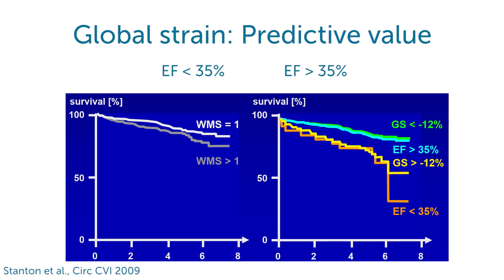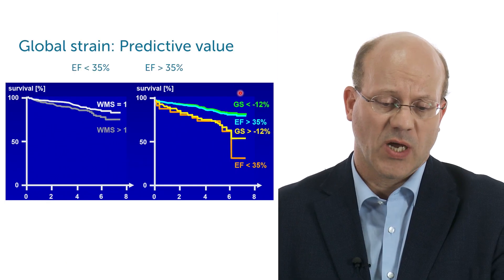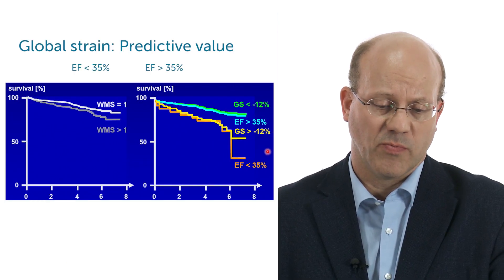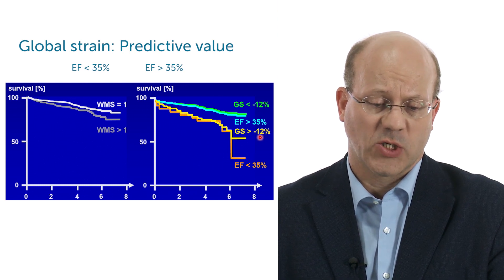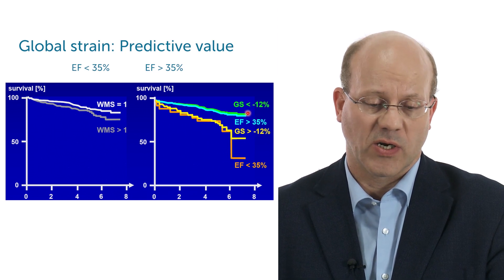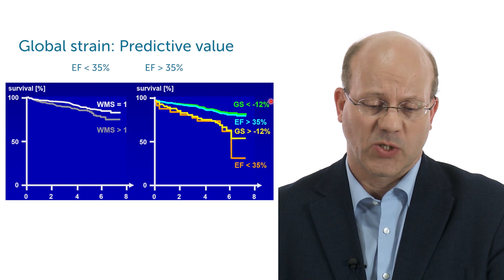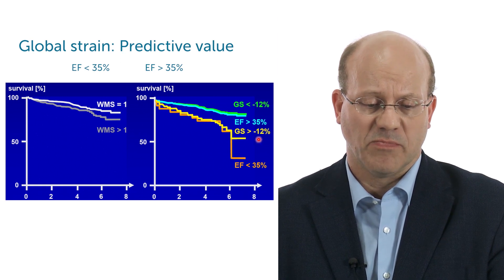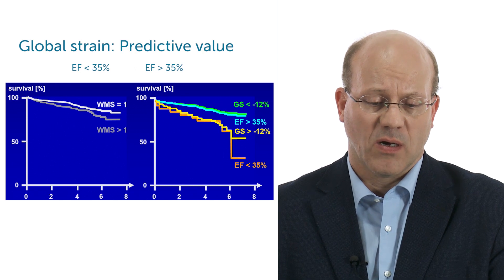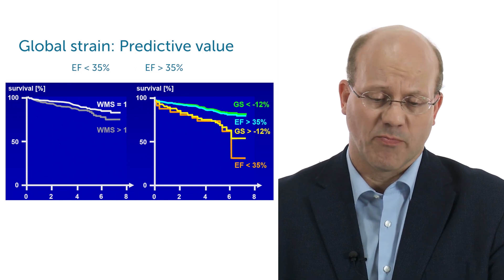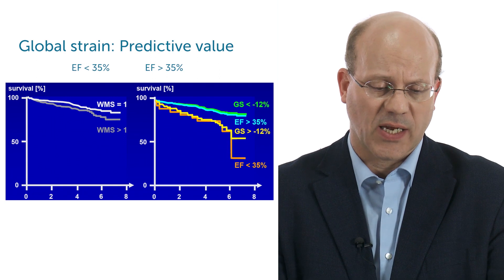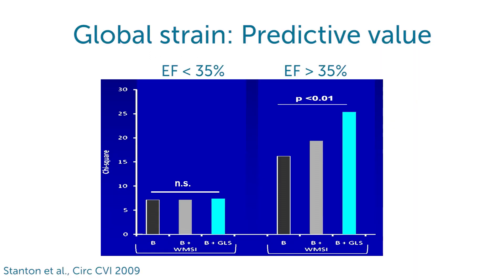This is a study comparing the predictive value of global longitudinal strain and ejection fraction in patients with a reduced ejection fraction below 35% and a global strain more than minus 12%, or in patients with ejection fraction above 35% or a global strain below minus 12%. As you can see, these four groups go together, so it's not very impressive — but when you do a detailed analysis of the cohort, you see something very interesting.